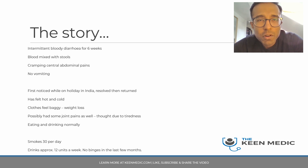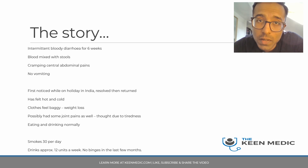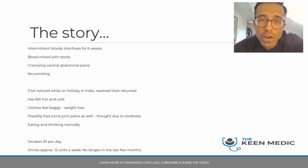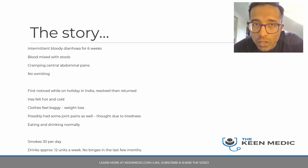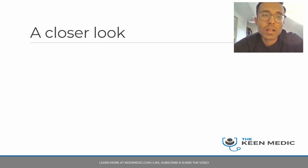He drinks approximately 12 units a week with no binges in the last few months. A few things to note: intermittent bloody diarrhea, cramping central abdominal pains coming and going, and symptoms first starting when he was on holiday in India.